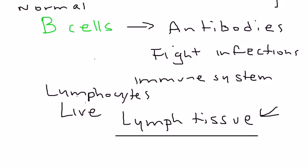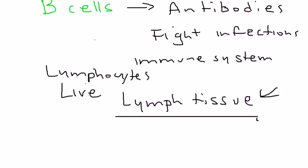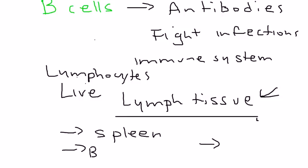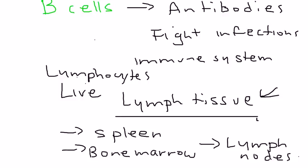Where is lymph tissue in your body? Lymph tissue exists in quite a few places. I'm going to mention three of the most important: the spleen, the bone marrow, and the lymph nodes. When you have Hodgkin's, these are the parts of the body that can be affected.